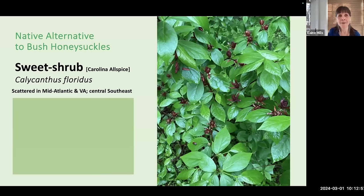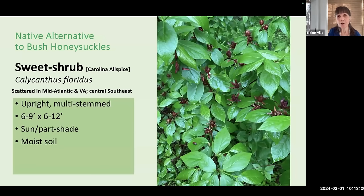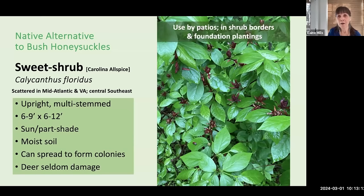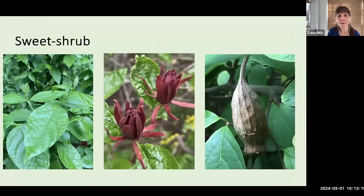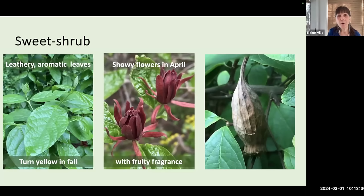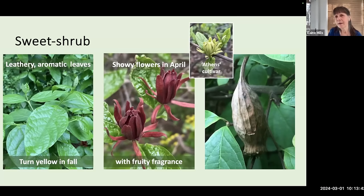Sweet shrub is an upright multi-stemmed shrub, six to nine feet tall, growing in sun to part shade and moist soil. Like some other plants, it can spread to form colonies, and is useful by patios, shrub borders, and foundation plantings. It has leathery aromatic leaves that turn yellow in the fall. An outstanding feature is its showy strap-like flowers in April with a fruity fragrance — something like strawberry and a little citrus. A favorite is the yellow-green Athens cultivar, especially long-blooming. In summer you'll see an interesting urn-shaped fruit.